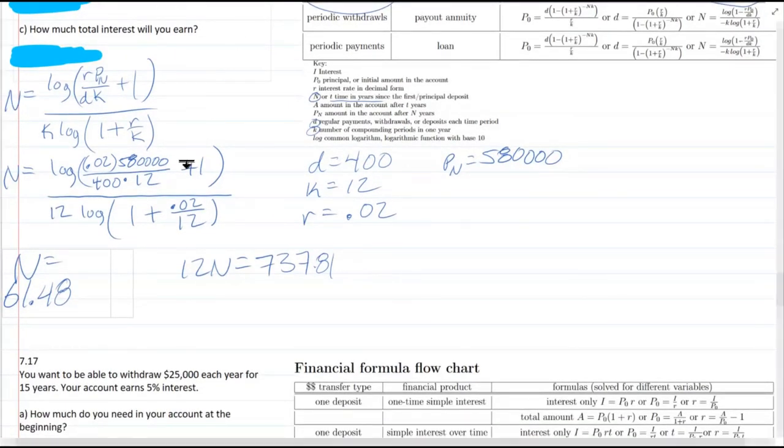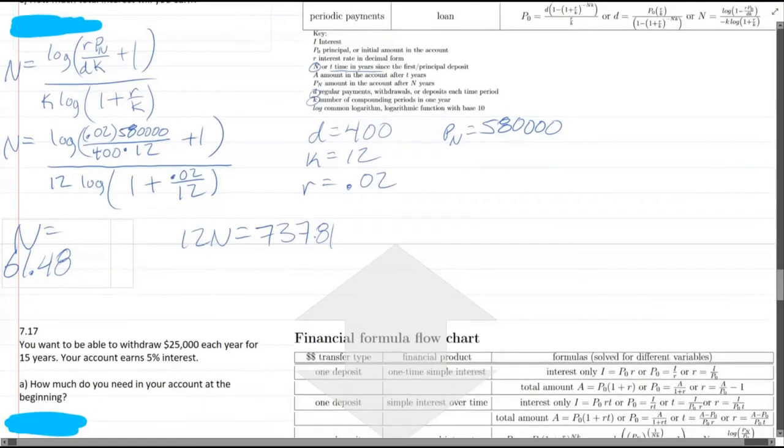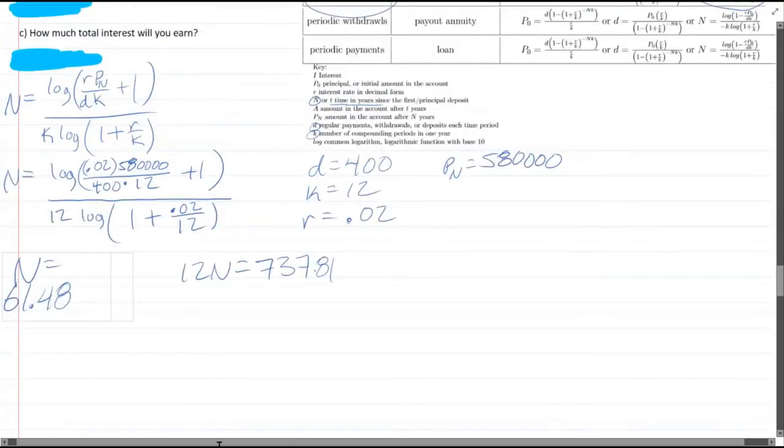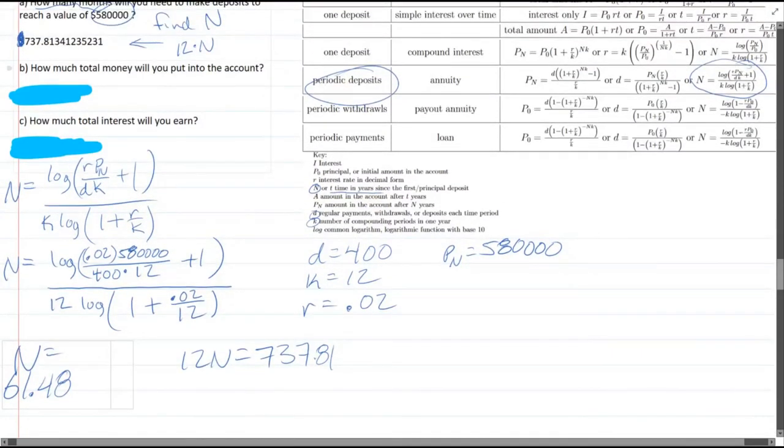Now the next part's in here. Let's get a little more room. How much total money will you put in the account? We could have computed that earlier. So part B, total money.